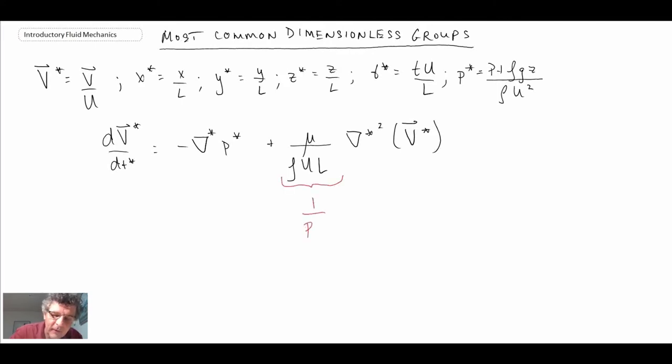It's one over a very common non-dimensional number in fluid mechanics, the Reynolds number. By going through this process, this gives another example that there are other mechanisms or ways that we can get these non-dimensional parameters that are very important within fluid mechanics. That is another technique that we can obtain these parameters.